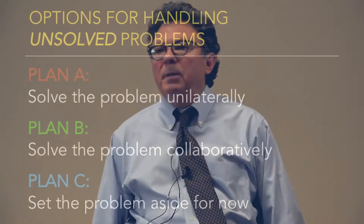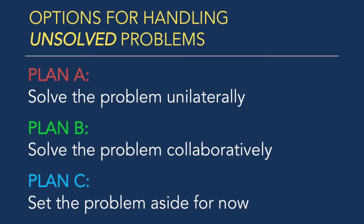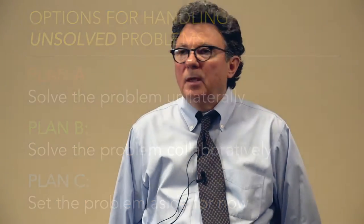You have three options for solving problems with kids. Those three options are called Plan A, Plan B, and Plan C. What I've done here is I've taken the many different ways in which adults deal with problems with kids and categorized them into three options: A, B, C. By the way, you're only using two of these options in this model.